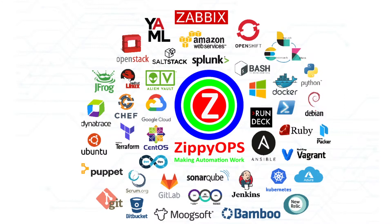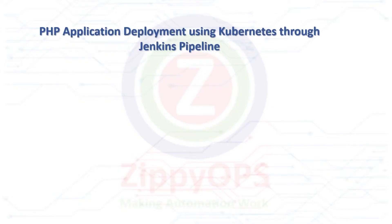Hi all! Welcome to PHP Application Deployment on the OnPrem Kubernetes demo. In this video, we are going to demonstrate the deployment of PHP applications on the OnPerm Kubernetes cluster. The complete process is orchestrated through the Jenkins pipeline.